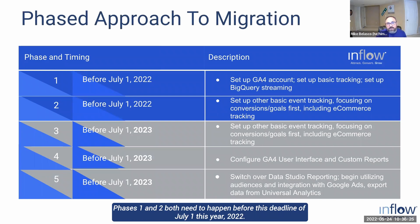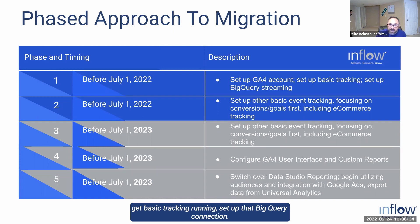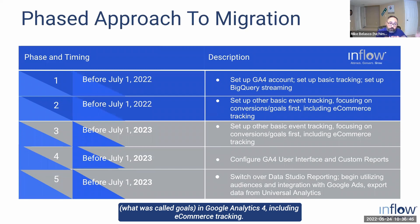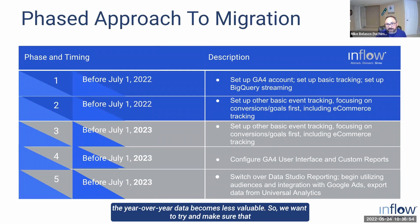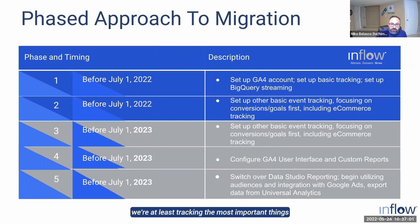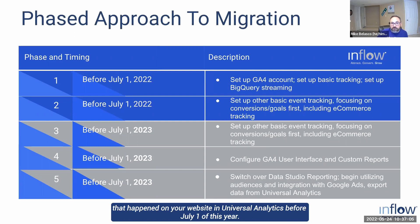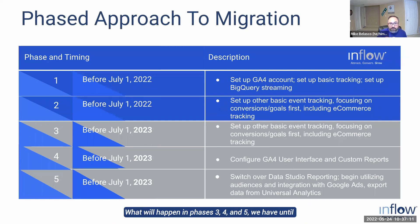The phased approach to migration: Phases 1 and 2 both need to happen before the July 1st, 2022 deadline. That means we need to set up the GA4 accounts, get basic tracking running, and set up the BigQuery connection. We also want to set up basic event tracking and conversion tracking — what were called goals in Universal Analytics — including e-commerce tracking. Without that, the year-over-year data becomes less valuable, so we want to ensure we're tracking the most important things on your website.